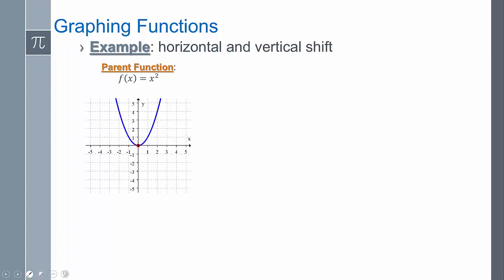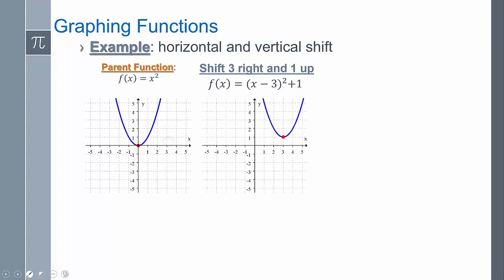Now we can put these two concepts together. If I wanted to shift it three to the right and up one, that means it's going to be (x - 3)² + 1. Let's look at our starting position here—that's going to move over three spaces and then up one, so that's where it ended up at (3, 1).